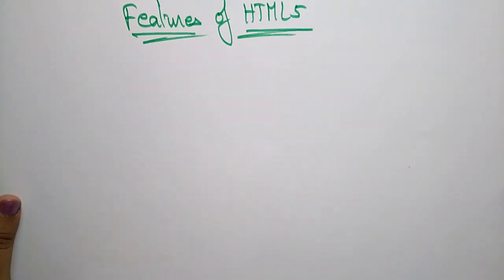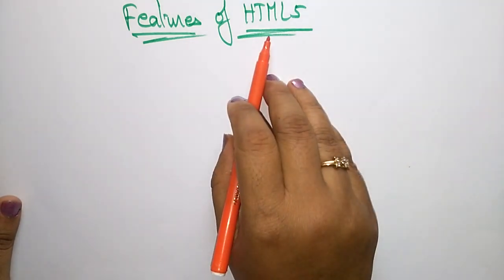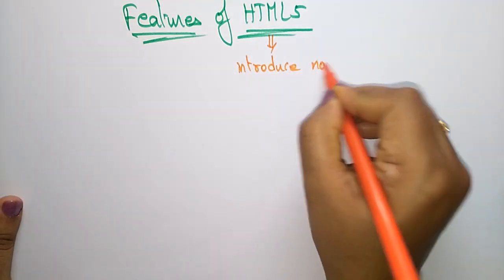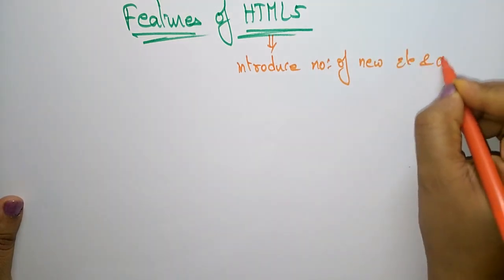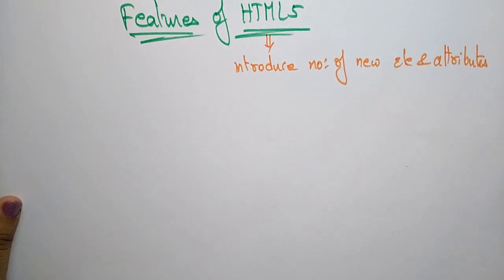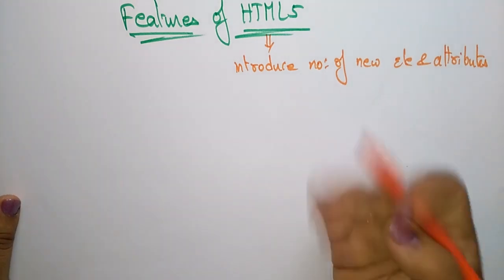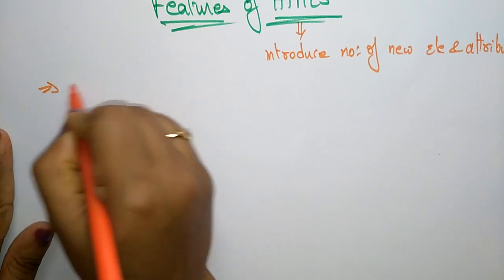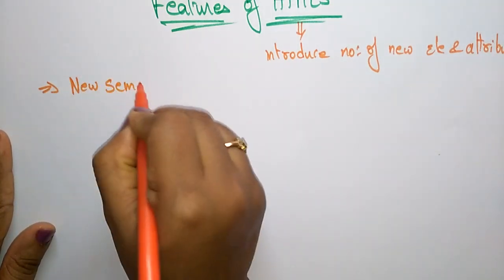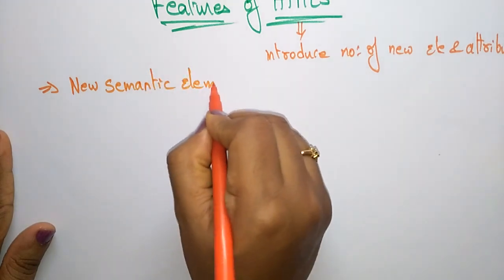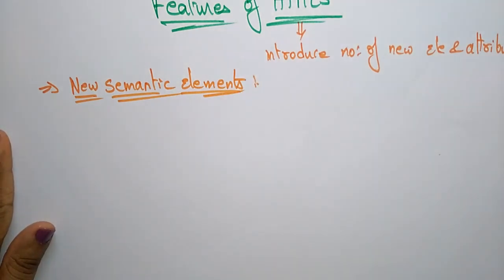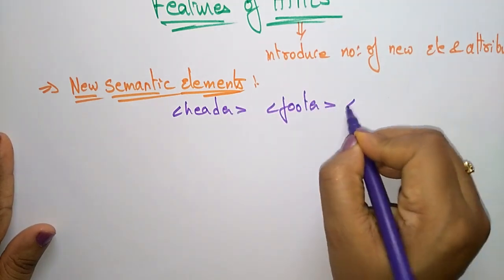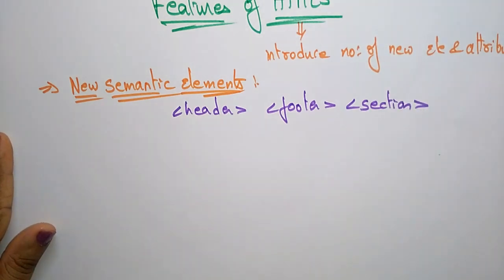HTML5 introduces new elements as well as attributes that can help you in building modern websites. Now let's see some of the most important features in HTML5. The first thing is new semantic elements. The new semantic elements are nothing but the header, footer, and some section tags — these are the tags used to structure web pages.